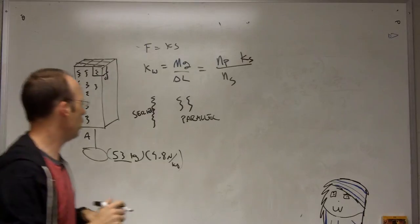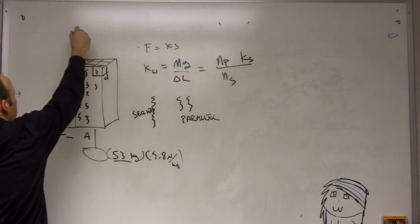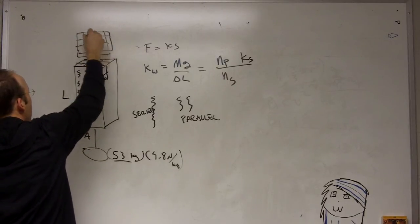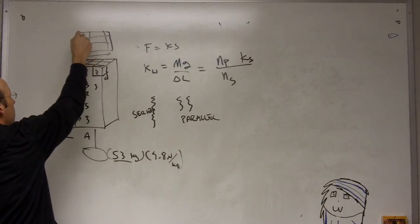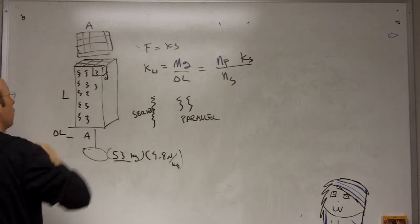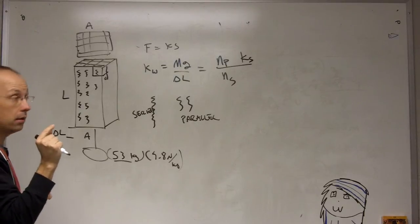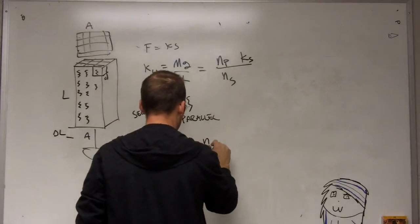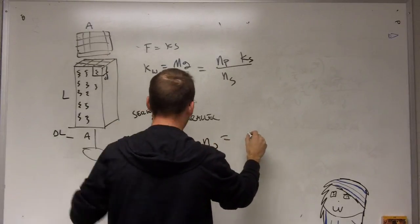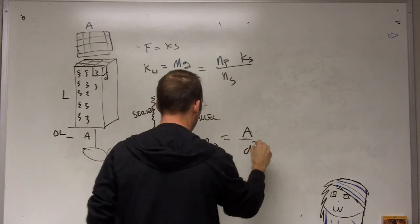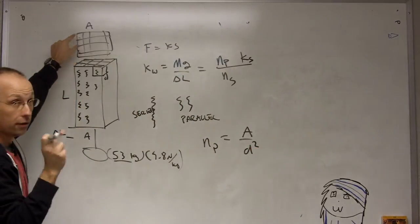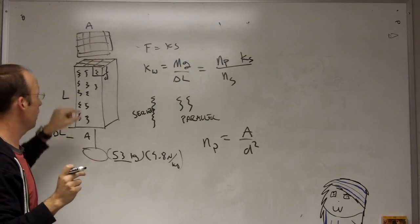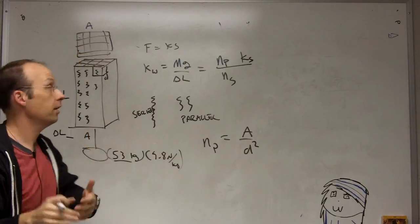So how do I find the number of springs in parallel? Well, if I look at this head on, this is some area A. If I know the interatomic diameter D, then I can find that. I could say NP is just that total area A divided by D squared, right? Because each one of those squares has a size of D times D, and then if I divide A by D times D, that would give me the number of squares in there, which is the number of springs in parallel.